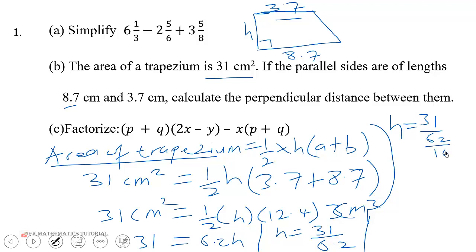So this is the same as 31 divided by 62 over 10. So this is equal to 31 times 10 over 62. So 31 going to 62, 2 times, 2 going to 10, 5 times. So it is equal to 5 centimeters.